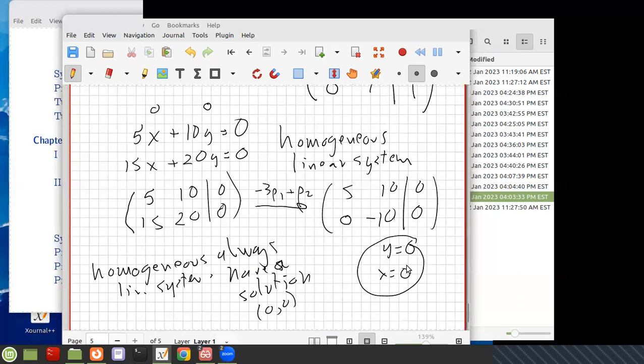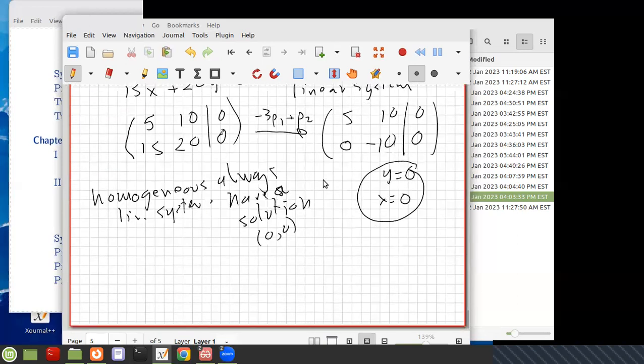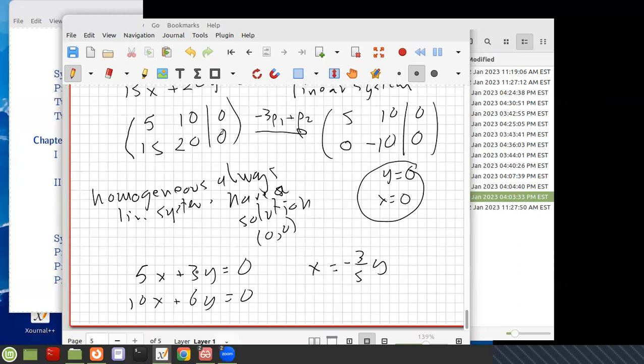But they don't have to have just this. They can have an infinite number of solutions. So if I have the linear system 5x plus 3y equals 0 and 10x plus 6y equals 0, you can see that minus 2 row 1 plus row 2 gives a zero row. So you're going to have x equals minus 3/5 y as your solution for the leading variable. You're going to have a free variable, and even though it's a homogeneous system, you have an infinite number of solutions.